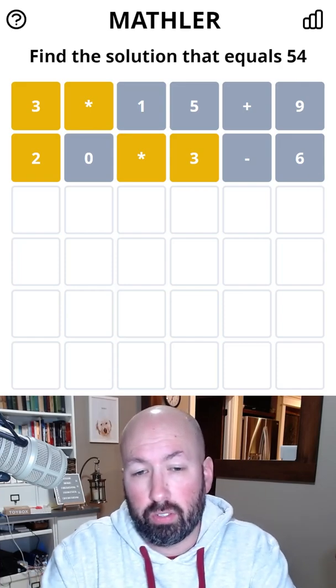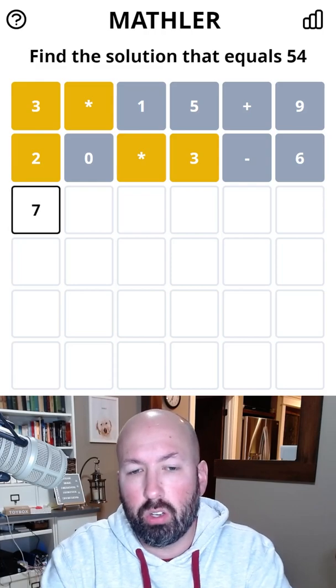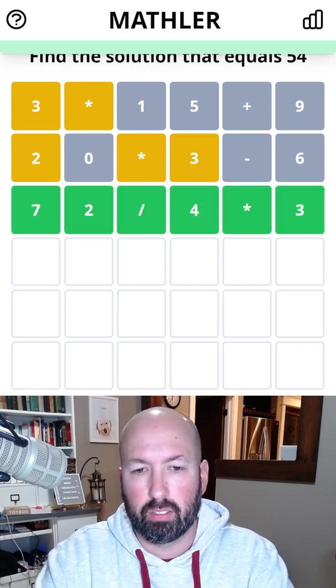18 times 3 is 54, so if we could divide to get to 18. What if we had 72 divided by 4? That would give us 18. We could multiply by 3. Let's try that. There we go.